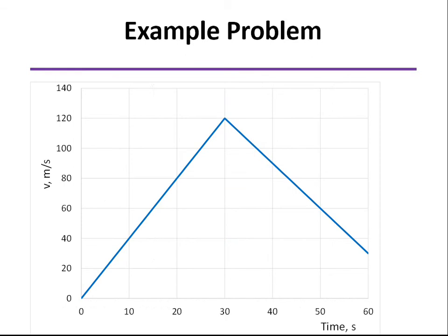Notice, of course, we know that those are straight lines because the accelerations are constant. And remember, the slope of the velocity curve is the acceleration. So a slope of 4 and a slope of minus 3.